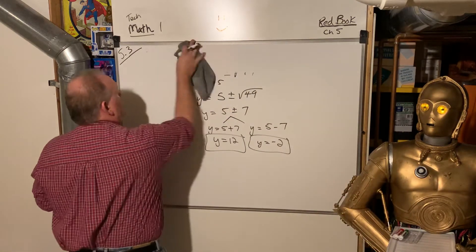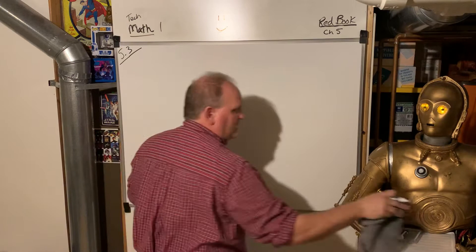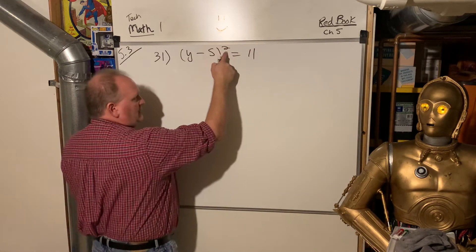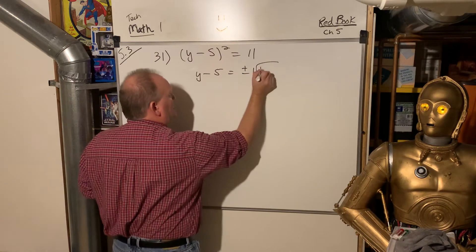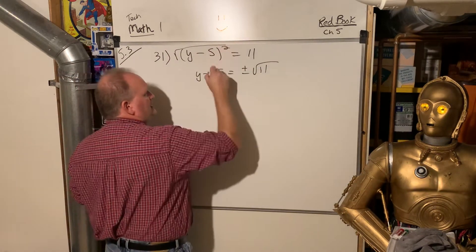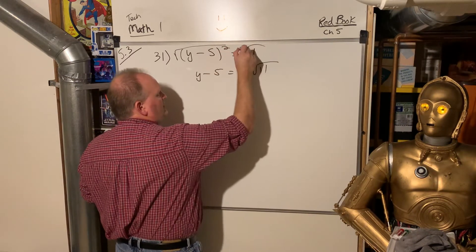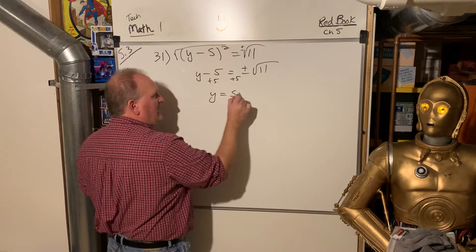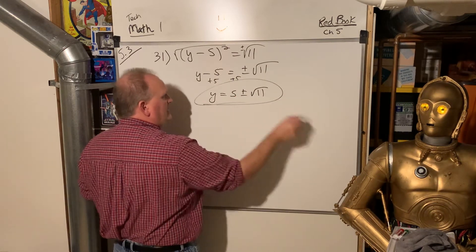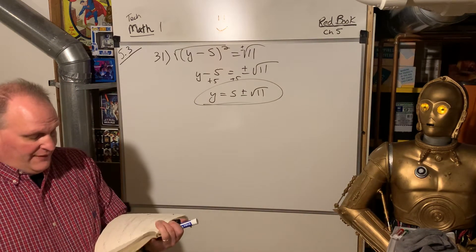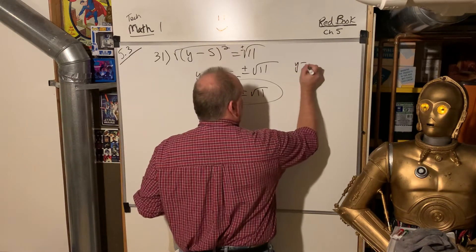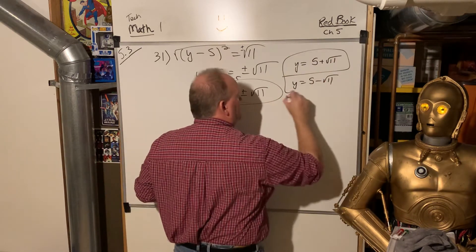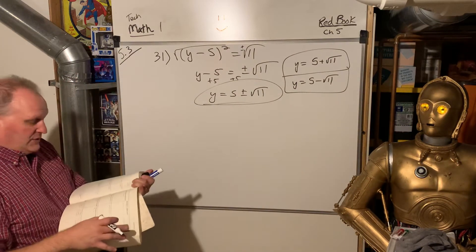Problem 31: the answer looks harder but the work is easier. Take the square root of both sides, putting a plus-or-minus on the right side. The square and square root on the left cancel each other out. Then add 5 to isolate the variable. Unlike problem 29, this one doesn't have a perfect square under the radical, so we just write y = 5 ± the square root of 11 and stop. You can write it out as two separate answers if you prefer, but plus-or-minus is acceptable shorthand.